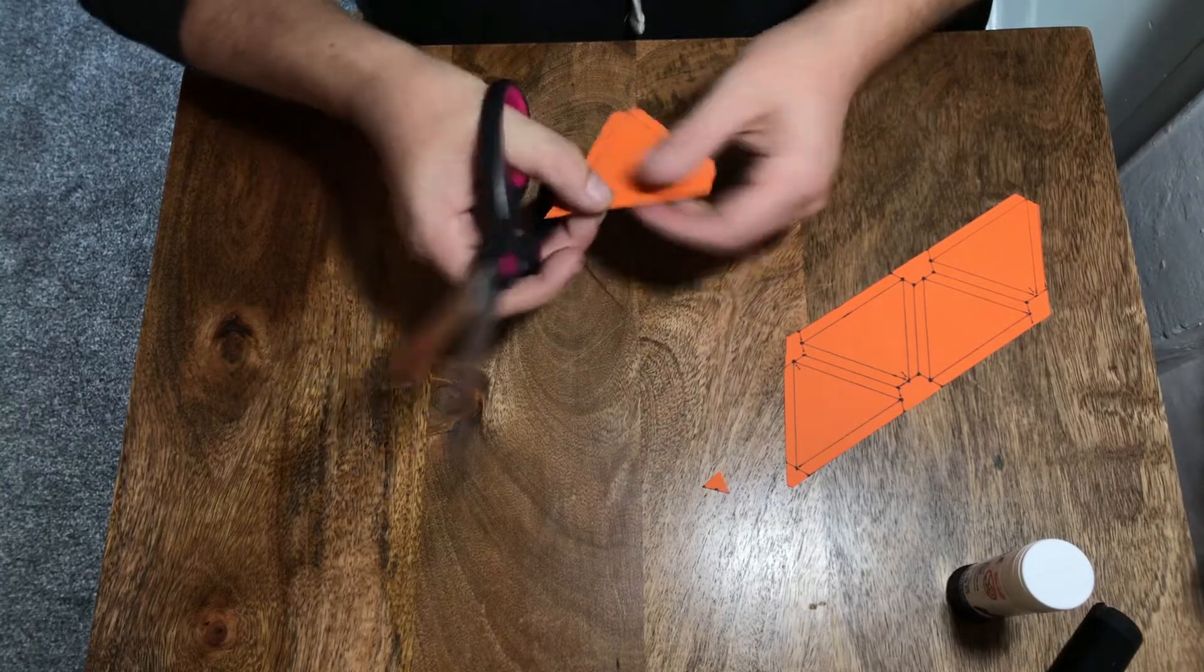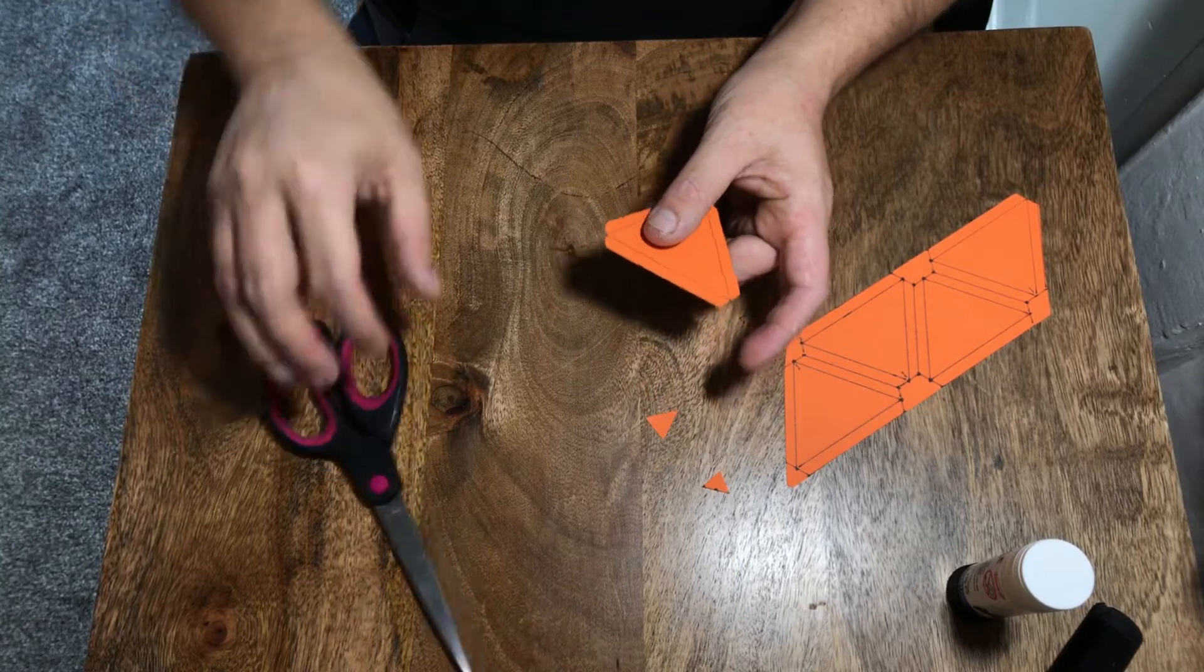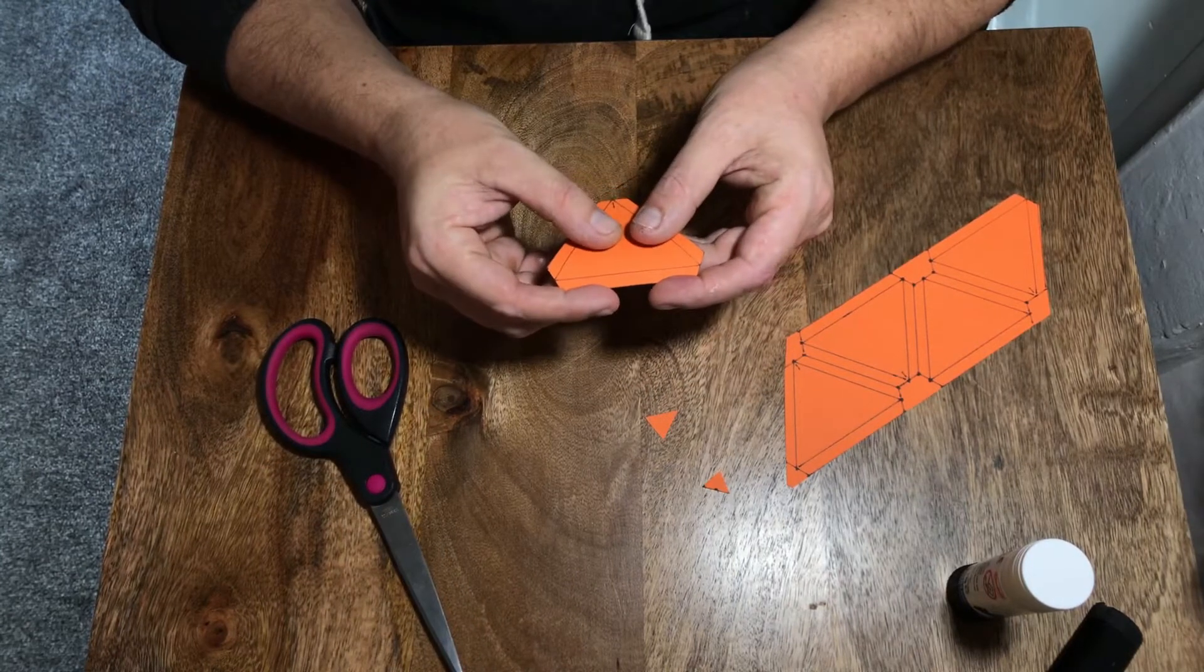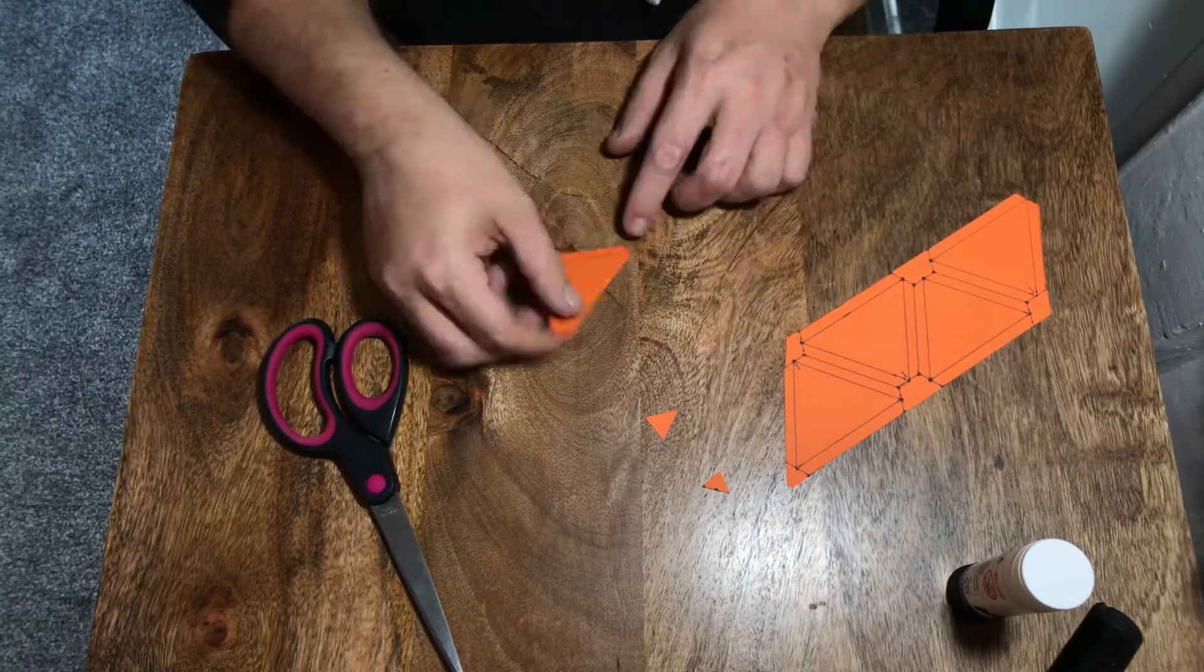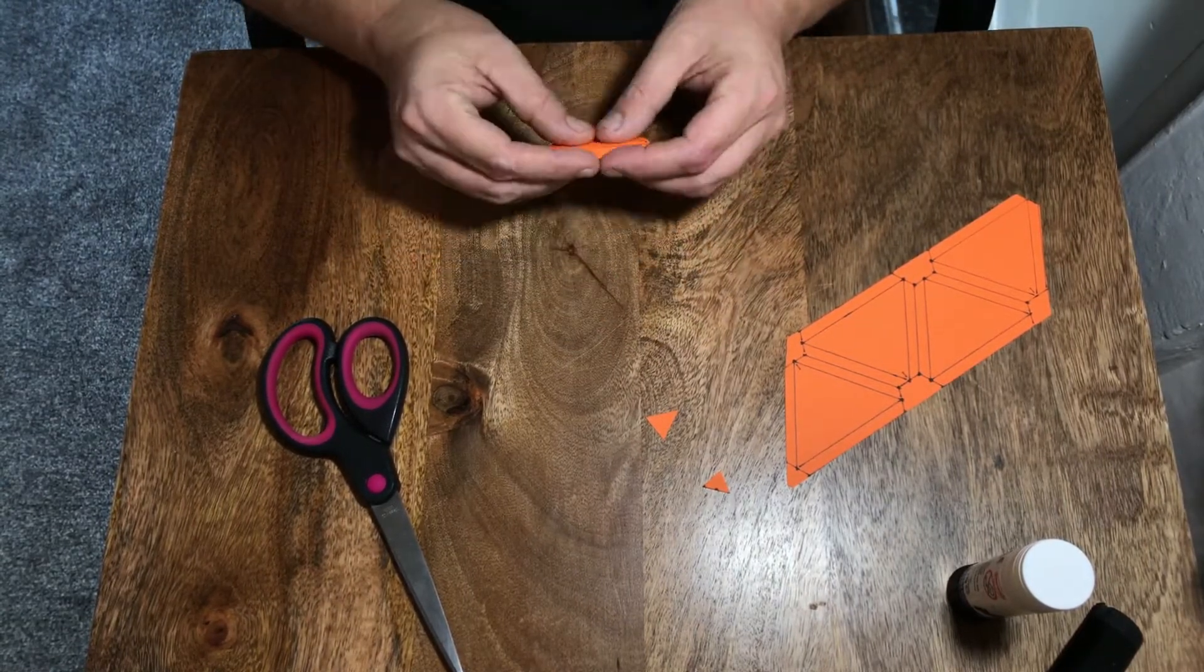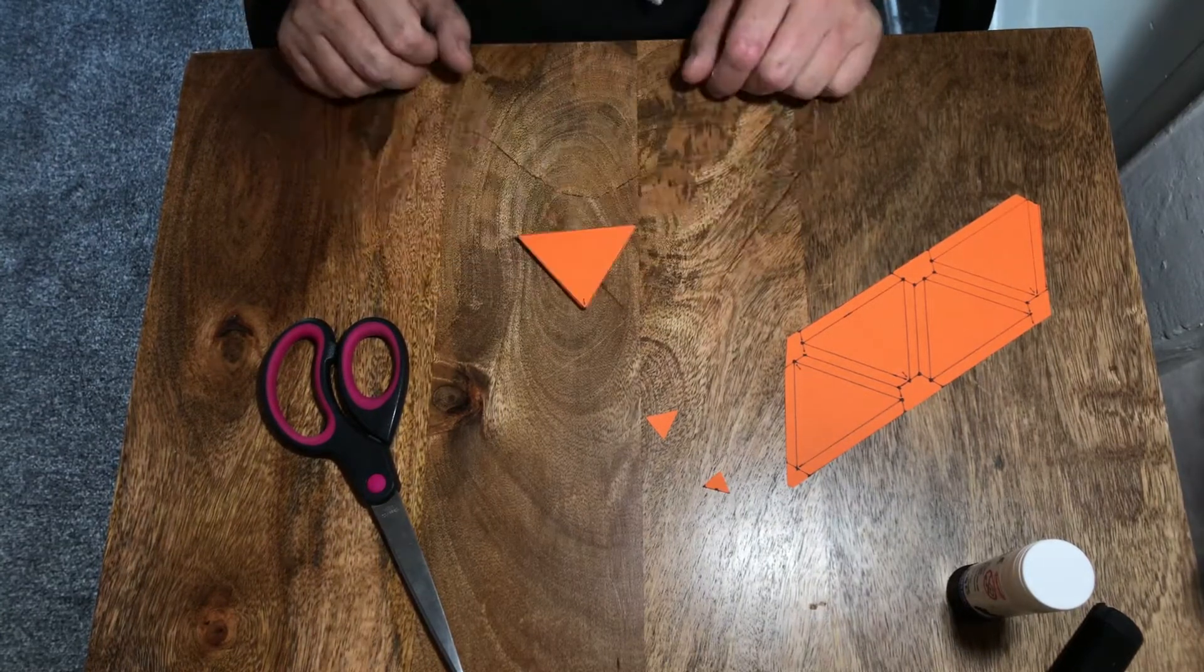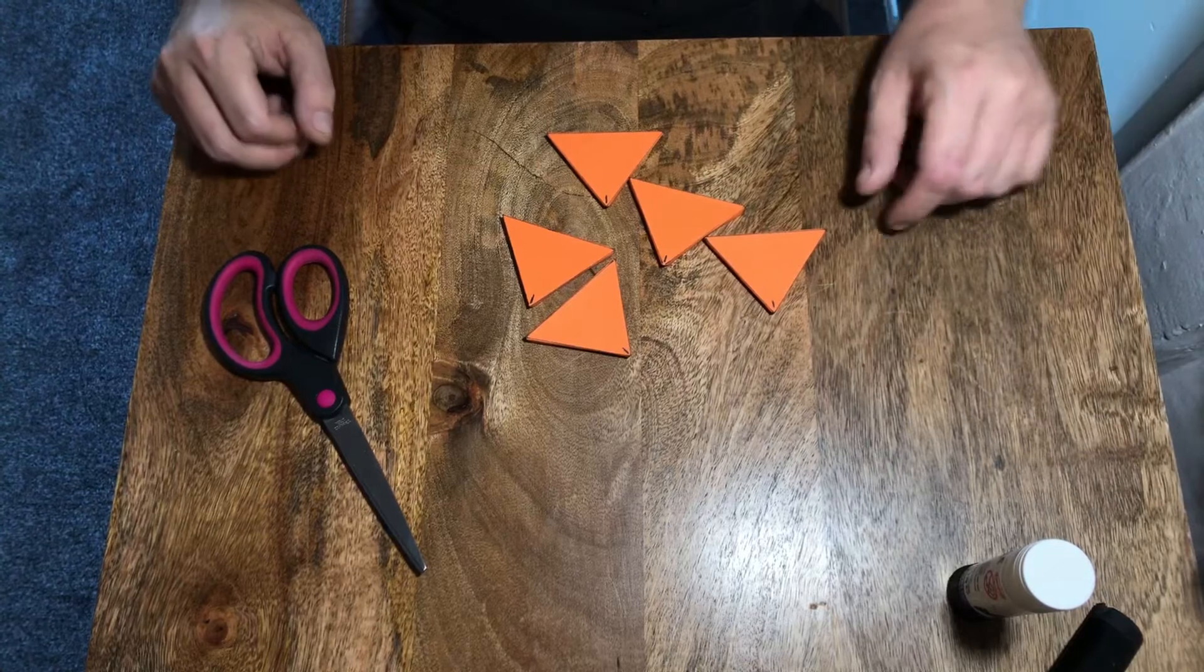Along these lines here we don't need these pieces, so we're just going to cut off these small triangle pieces. And then what we want to do is we want to fold all of these along this black line here.